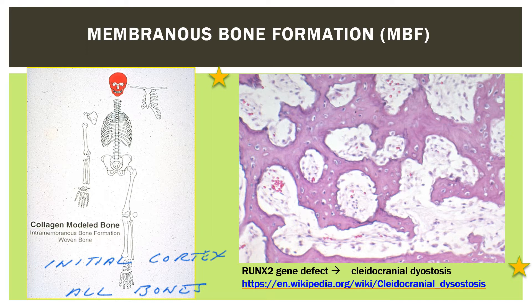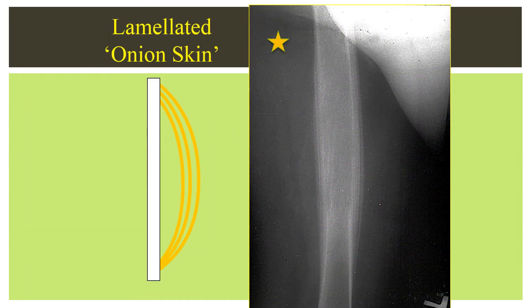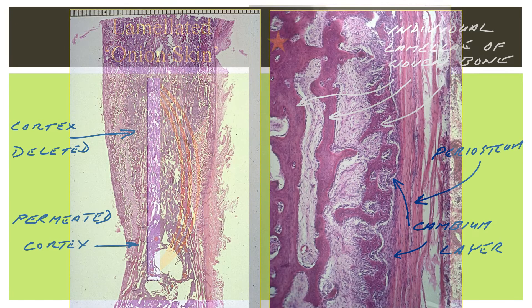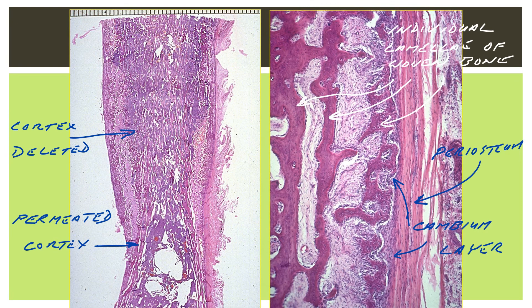Gold stars appearing in these videos indicate clinically important concepts. The radiograph shows a clinical example — a multi-lamellated periosteal reaction in response to tumor. The specimen shows medullary replacement by tumor and three woven bone lamellae produced by the cambium layer of the periosteum.